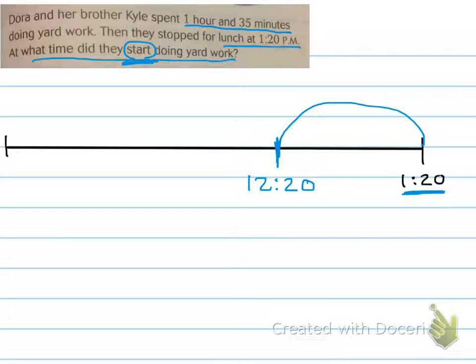an hour before 1:20 PM would be 12:20 PM. Okay, so now we've gone back an hour. Now let's go back those 35 minutes. Well, I see that we're at 12:20 PM, so let's take away 20 minutes first. If we take away 20 minutes, that puts us at 12 o'clock. But it said take away 35 minutes, so 20 minutes, so I need another 15 taken off. Right? That would be 15 minutes before 12 o'clock would be 11:45.